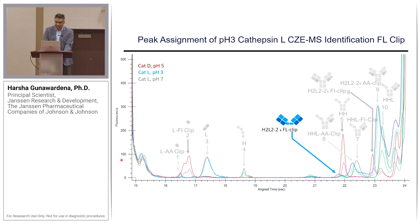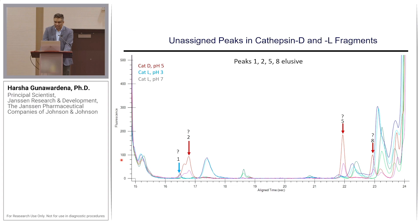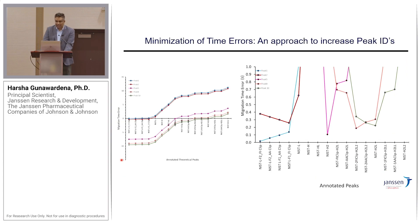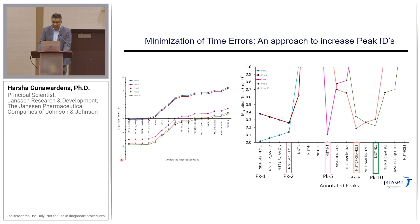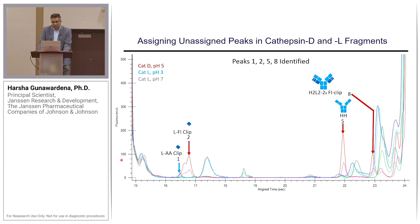We still had certain peaks not identified — peaks 1, 2, 5, and 8 remained as question marks. Using minimization of time errors, we minimize the error based on the calibration regression analysis while also having theoretical masses for each known fragment. For each unidentified peak, we minimize the time errors for each theoretical fragment obtained from the analysis. In principle, you can input any type of fragment and see what the migration time errors should be for that fragment. In this way, peaks 1, 2, 5, and 8 were assigned to new types of clips that we didn't resolve in the first pass.